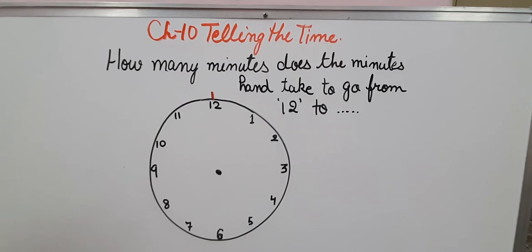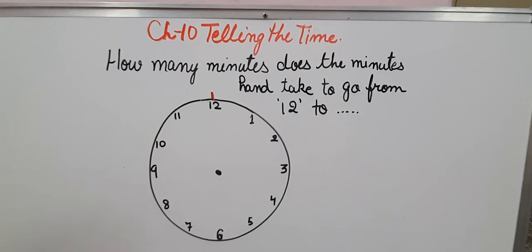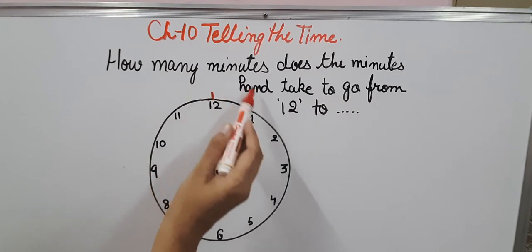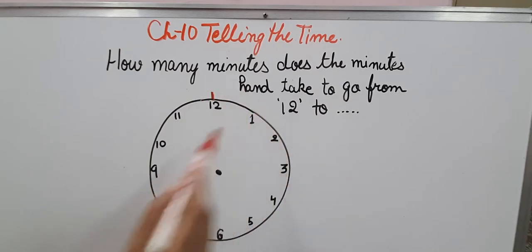To understand this we have to understand the skip counting which we saw in the last videos in a detailed way. We know that when we jump from 12 to 1 it will be 5 minutes or counted as 5 minutes.